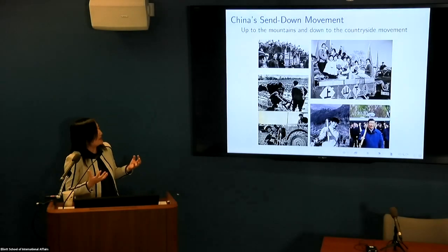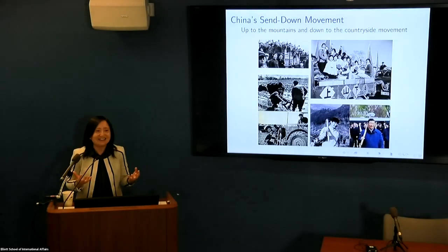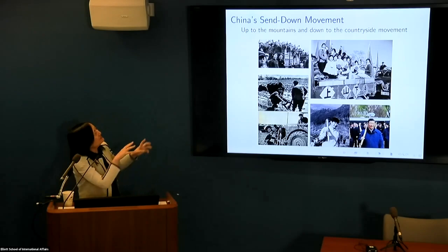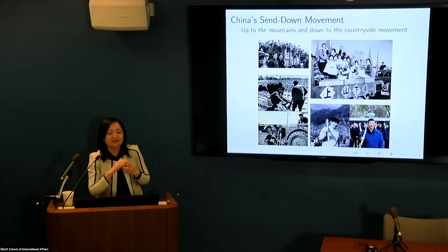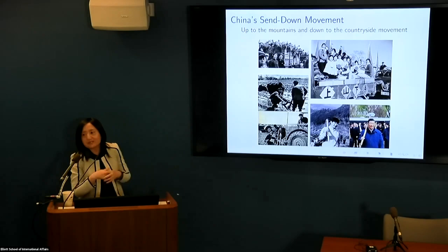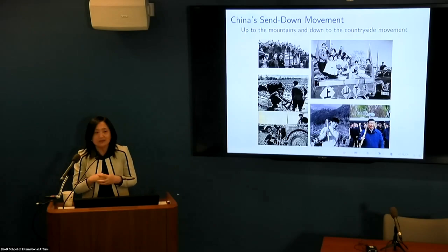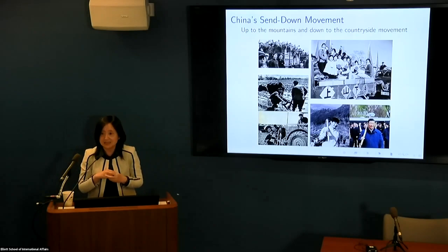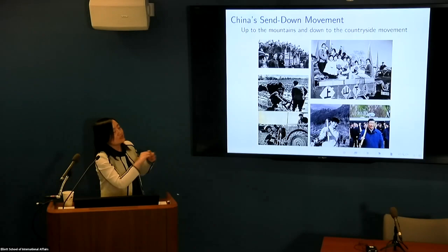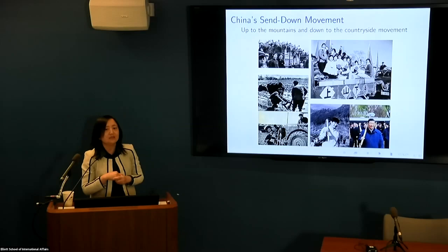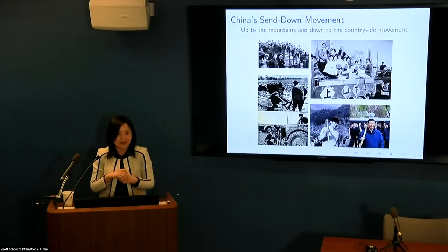The Send Down Movement in Chinese is called Shang Shan Xia Xiang — literally 'up to the mountains and down to the countryside' movement. During this period, young students, including Xi Jinping, were sent down to the countryside. He was age 16 in 1969 and was part of this cohort that got sent down. He went to a village called Liangjiahe in Shaanxi province, which is now kind of a shrine for Chinese officials to visit. He referred to his experience often after coming to power — you can see pictures of him then and now.